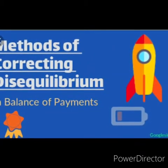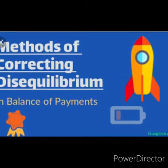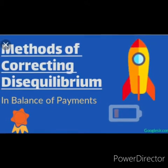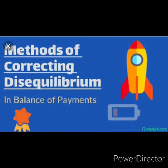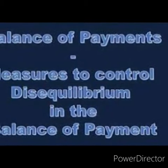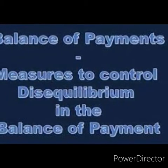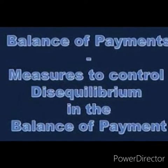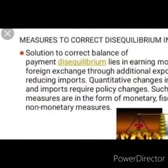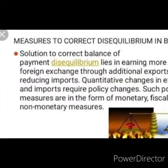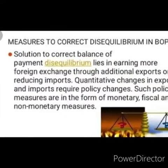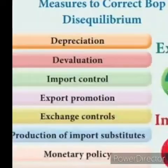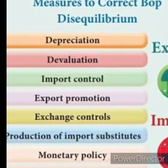Hi kids, now we are going to learn about measures to correct BOP disequilibrium. Under this we have two types: automatic correction and deliberate measures. Under automatic correction we are going to see about price adjustment, interest rate adjustment, income adjustment, and capital flows. Automatic correction means automatically the BOP will be equalized.